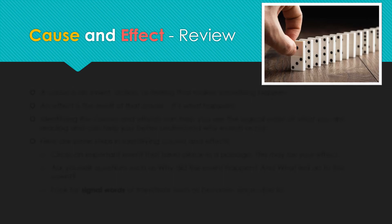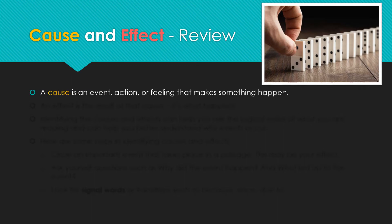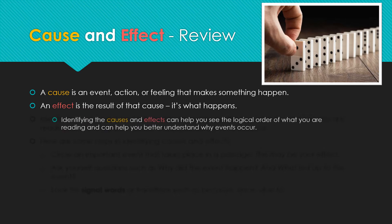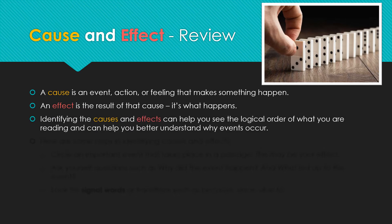This week we'll only be reviewing last week's comprehension skill and we'll also be learning two more things that you're going to be seeing in the text later. A cause is an event, action, or feeling that makes something happen, as we know. An effect is the result of that cause — it's what happens. Identifying the causes and effects can help you see the logical order of what you are reading and can help you better understand why events occur.